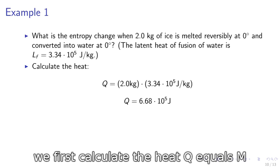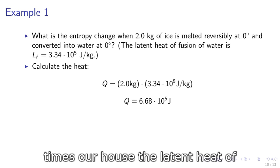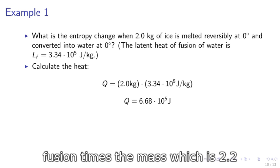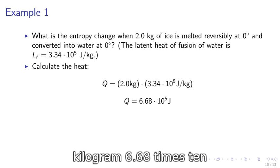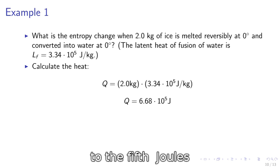We first calculate the heat, Q equals M times L, where L is the latent heat of fusion times the mass, which is 2.0 kilogram, obtaining Q equals 6.68 times 10 to the fifth joules.